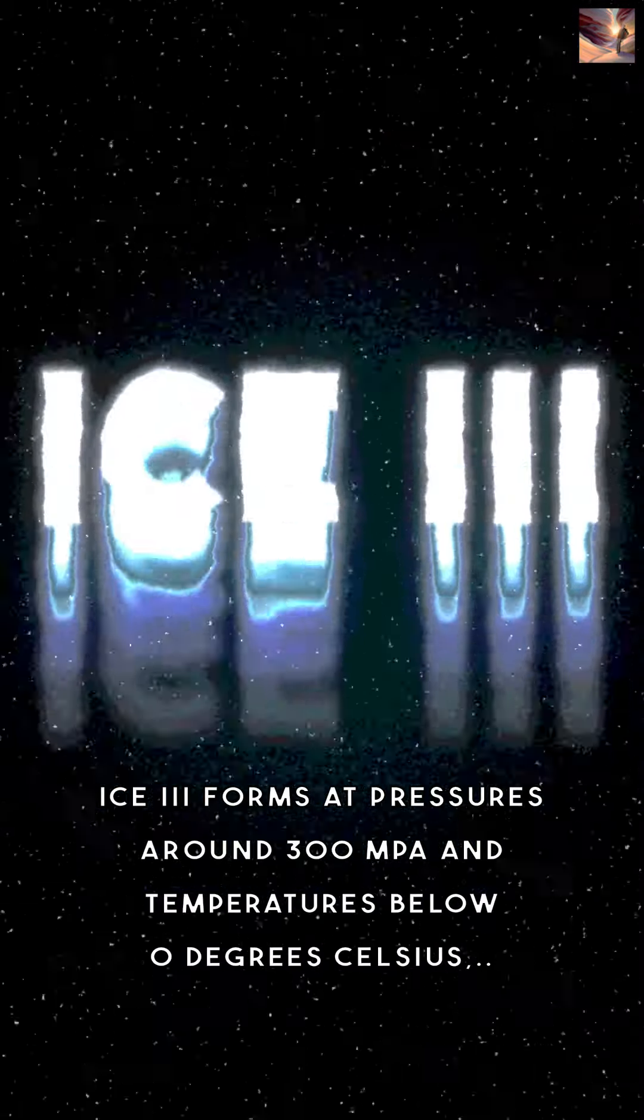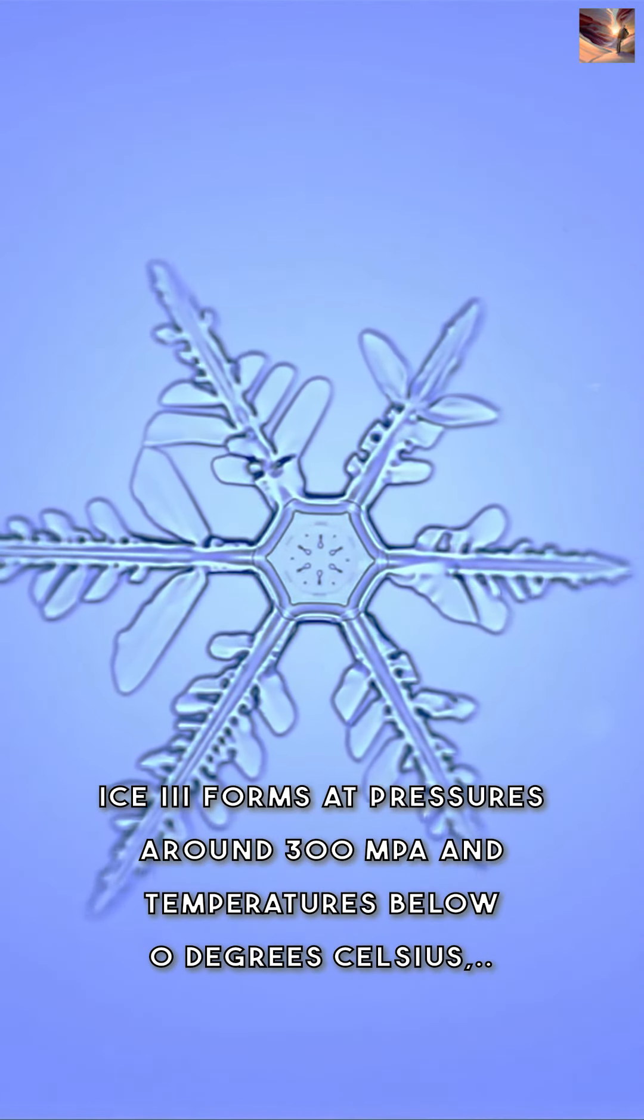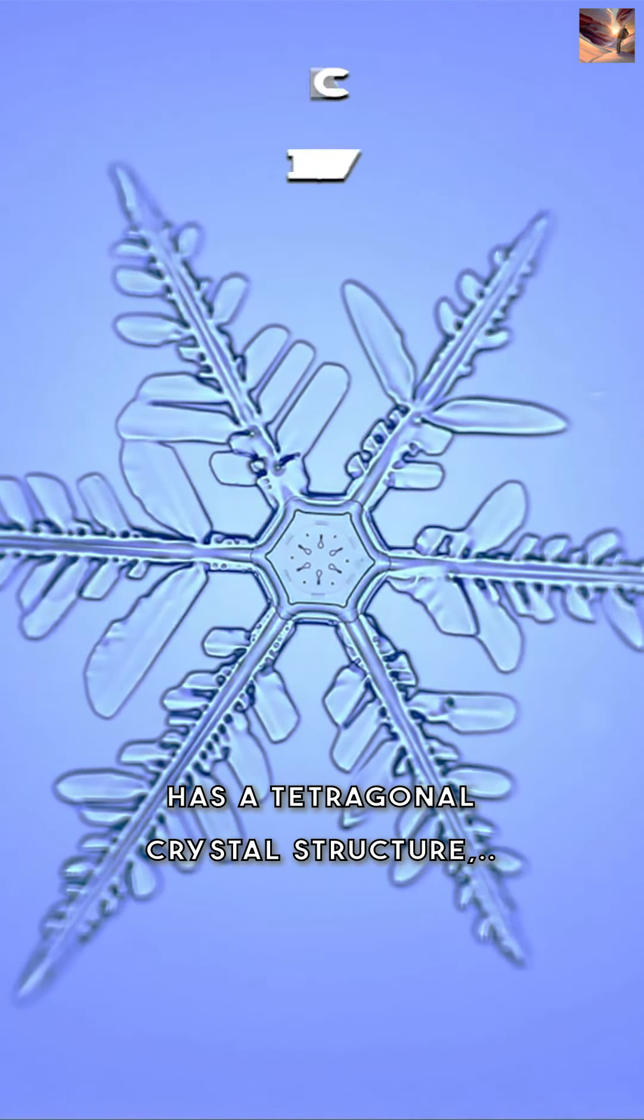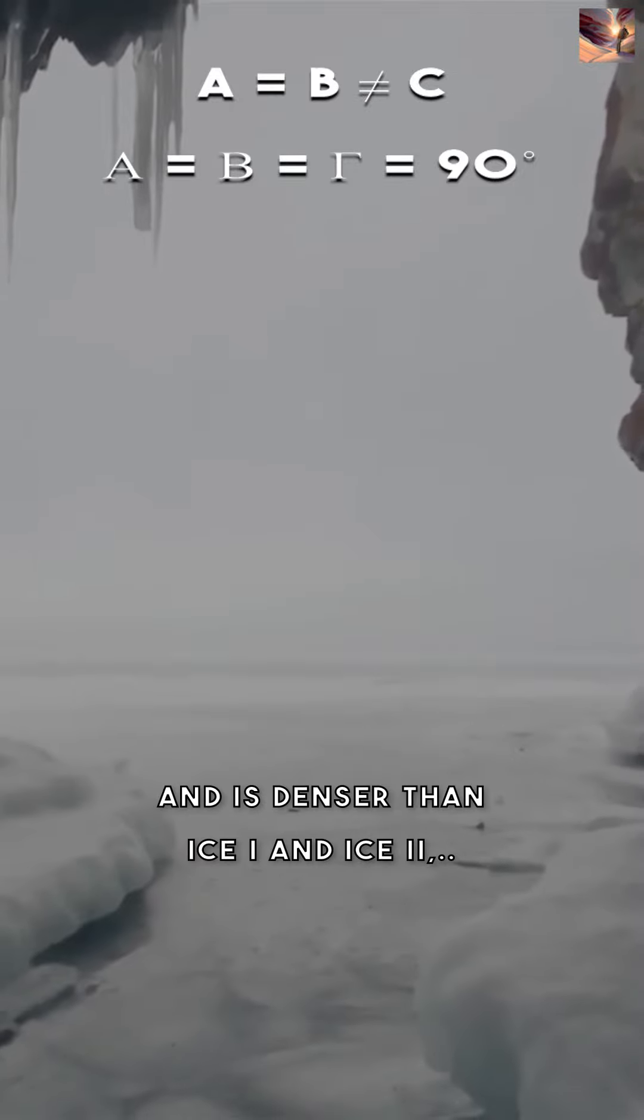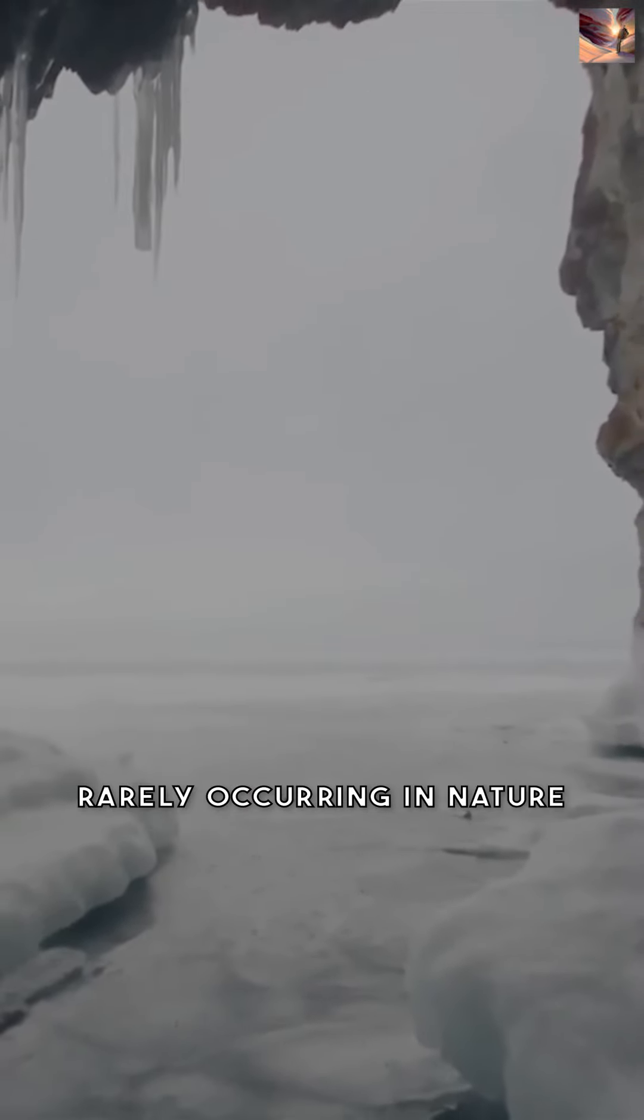Ice 3 forms at pressures around 300 megapascals and temperatures below 0 degrees Celsius. It has a tetragonal crystal structure and is denser than ice 1 and ice 2, rarely occurring in nature.